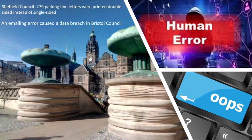An email error caused a data breach in Bristol Council. The council sent out an email asking for comments on a new support service for disabled children, and in that email the names and contacts of the children and their carers were visible to all recipients. The general guideline is that organizations experiencing such data breaches report them to the Information Commissioner's Office, the ICO, which then determines whether the organization is penalized and the extent of the penalty.